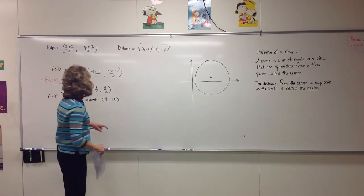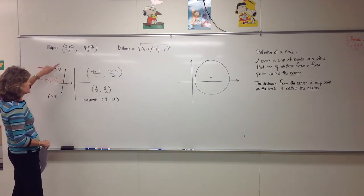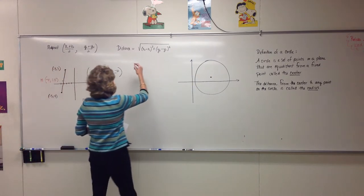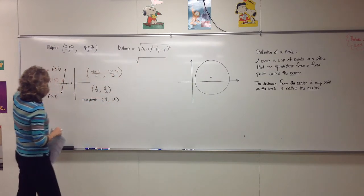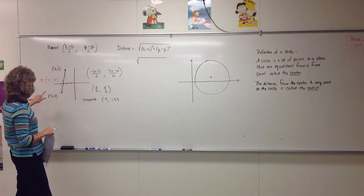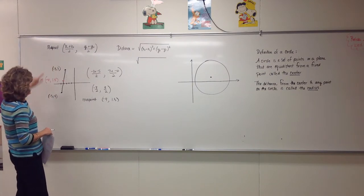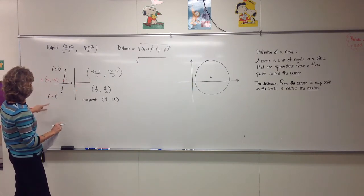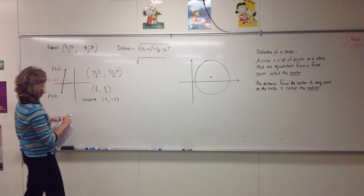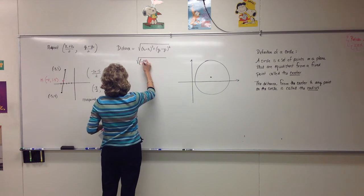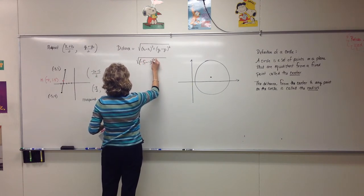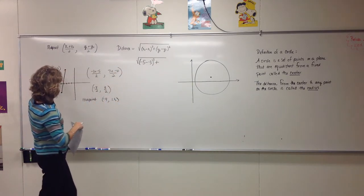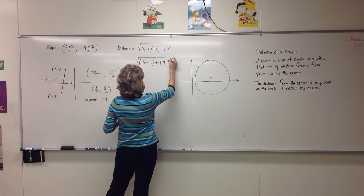If we want to find out how long that segment is — the distance from here to here — and I plug into the distance formula, it does not matter which point I call x1, y1 or x2, y2. If the top is x1, y1 and the bottom is x2, y2, and I plug in: negative five minus negative three squared plus y2 minus y1, negative four minus seven squared.